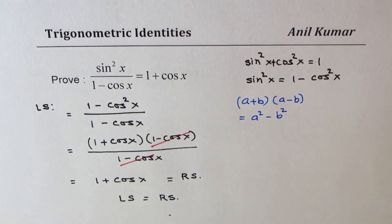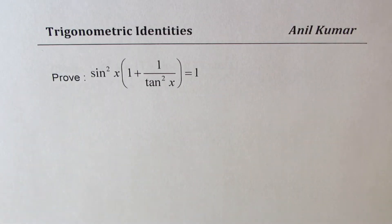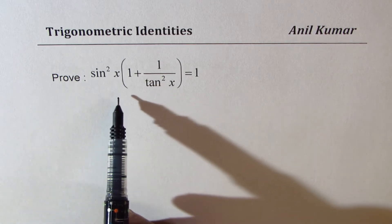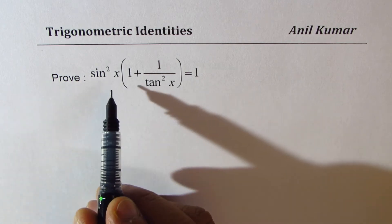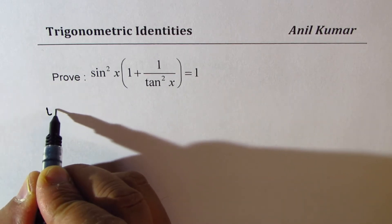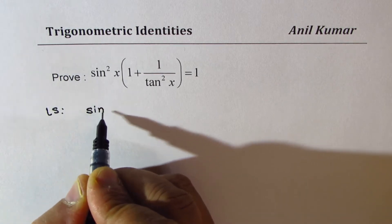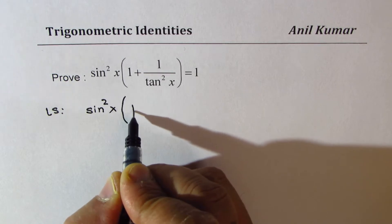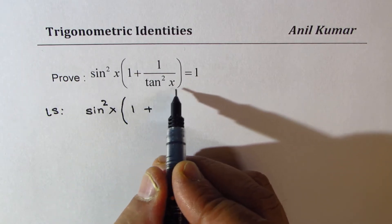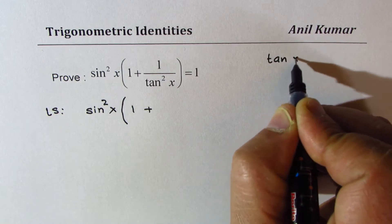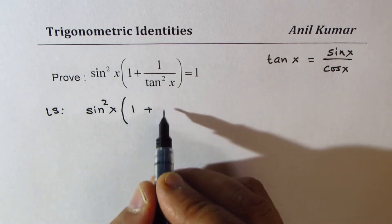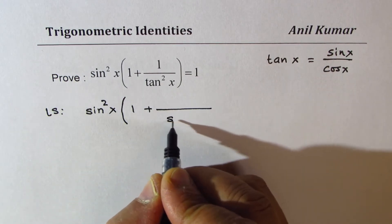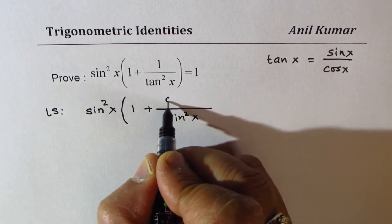Those are the basic steps to prove such identities. Now let's take another identity. We need to prove sin square x times 1 plus 1 over tan square x is equal to 1. We can rewrite the left side as sin square x times 1 plus — now tan x is the ratio of sin x and cos x, so tan square x is sin square x over cos square x.